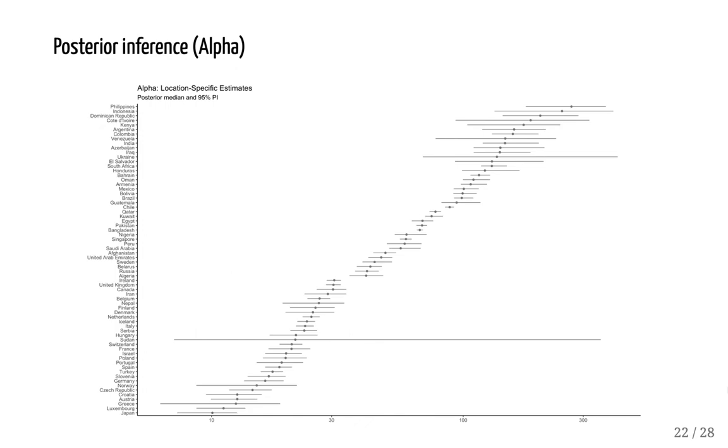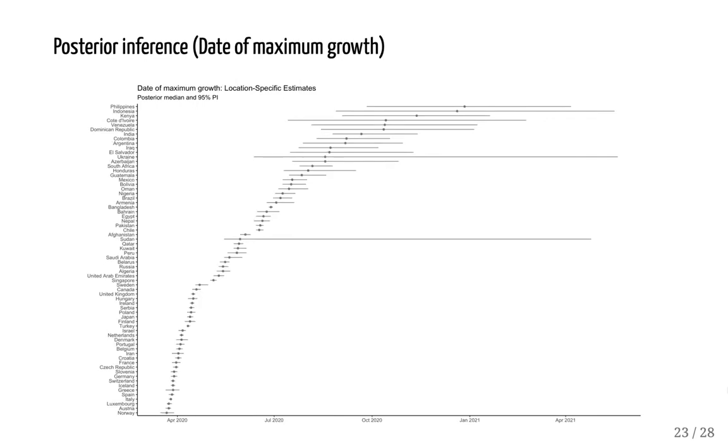We also get posterior distributions for all of the country-specific model parameters. Here we have alpha, which was the day of the maximum growth. Since alpha is a parameter for days, we can just as easily show it on the date scale, where we take the date at which a country entered the model and we add alpha to that date. And now we have the date on which a country will have the maximum growth.